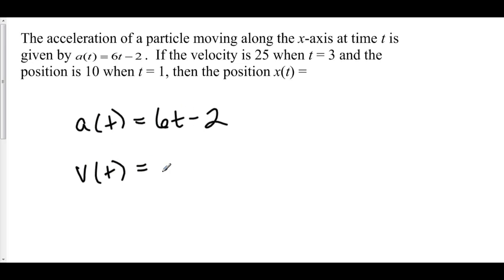The antiderivative of 6t is 3t squared. The antiderivative of negative 2 is negative 2t. And of course, since I have no limits of integration and I'm taking an antiderivative, I have a family of antiderivatives and we have to include this plus c.